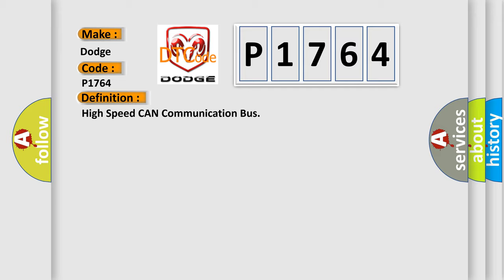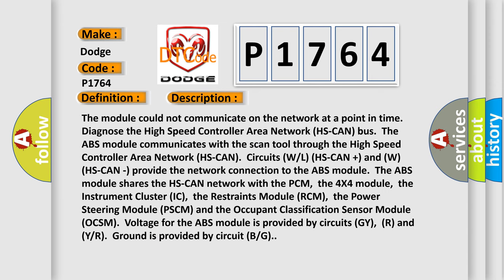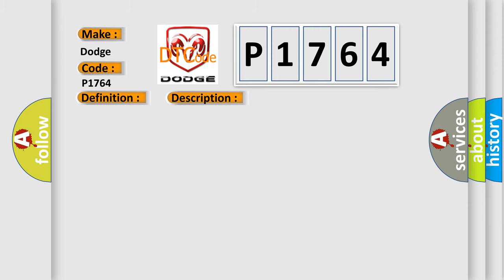The basic definition is High-speed CAN communication bus. The module could not communicate on the network at a point in time. Diagnose the high-speed controller area network (HS CAN) bus. The ABS module communicates with the scan tool through the HS CAN circuits (WHS CAN plus and WHS CAN). The ABS module shares the HS CAN network with the PCM, the 4X4 module, the instrument cluster (IC), the restraints module (RCM), the power steering module (PSCM), and the occupant classification sensor module (OCSM). Voltage for the ABS module is provided by circuits GY/R, and ground is provided by circuit BG. This diagnostic error occurs most often due to fuse wiring, terminals or connectors, or the ABS module itself.